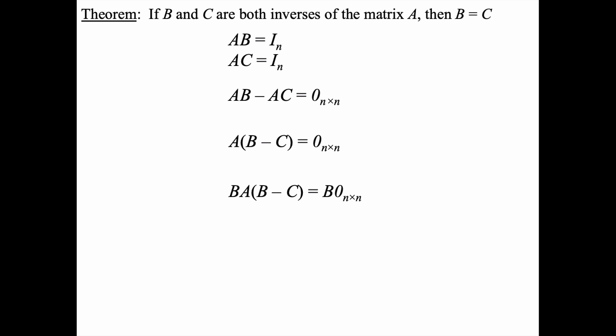Let's say we use matrix B and multiply both sides of this equation on the left by matrix B. Well certainly B times A is the identity. B times the zero matrix on the right is just the zero matrix.